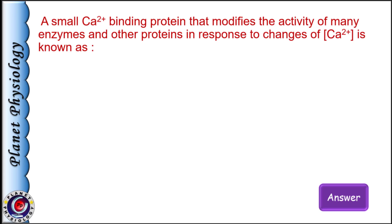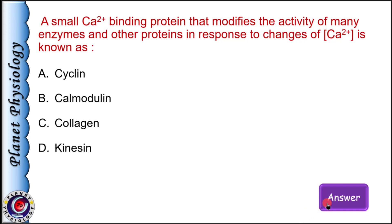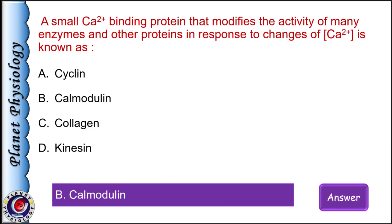A small calcium-binding protein that modifies the activity of many enzymes and other proteins in response to changes in calcium concentration is known as: a) cyclin, b) calmodulin, c) collagen, and d) kinesin. It is calmodulin. Calmodulin can bind 4 calcium ions, and calcium-calmodulin interaction activates calmodulin-dependent kinases, leading to smooth muscle contraction, synaptic transmission, protein synthesis, or activation of T lymphocytes. Other calcium-binding proteins are troponin and calbindin.